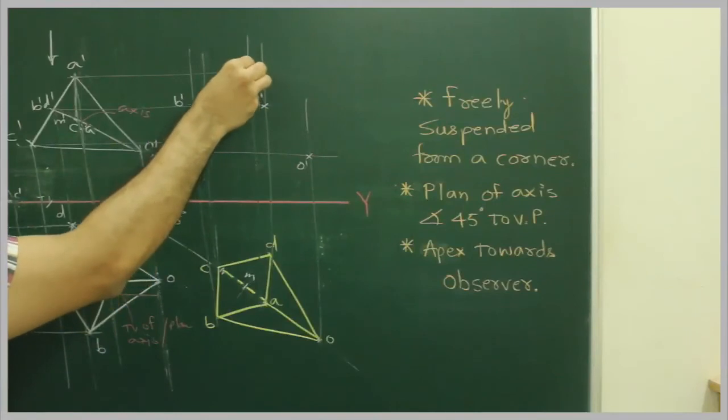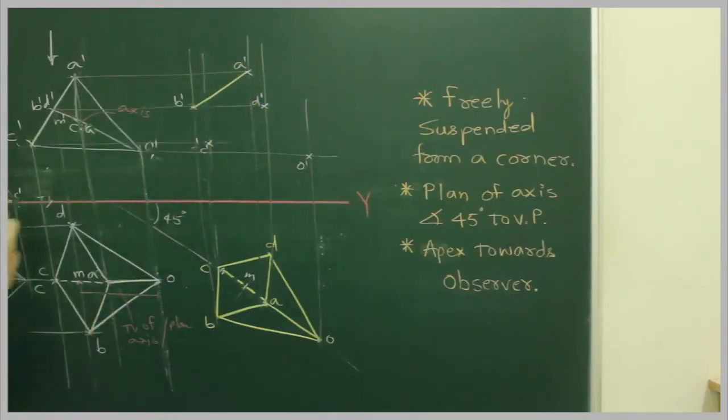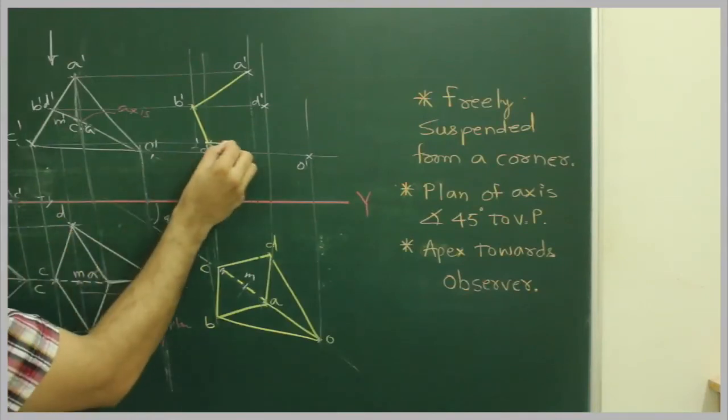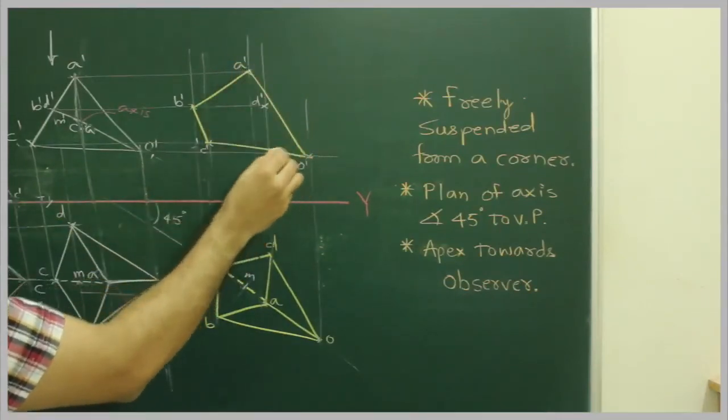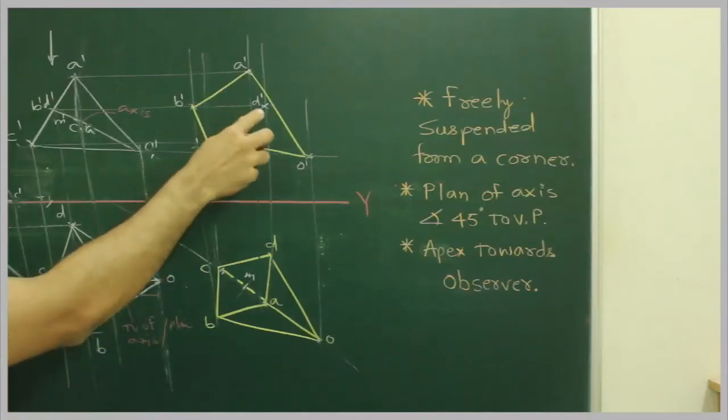So we join A dash to B dash, B dash to C dash, C dash to D dash, and A dash to O dash. D is inside.